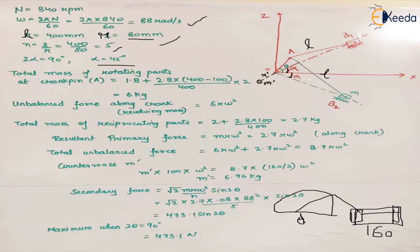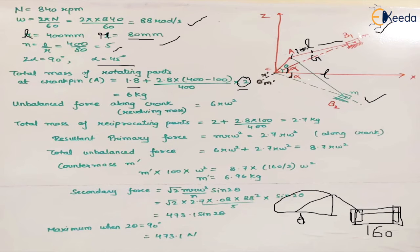The center of mass of the connecting rod is at 100 mm from the crank pin center, which is point A. Using dynamic equivalent reduction, the connecting rod is replaced by two point masses — one at the crank pin and one at the gudgeon pin. The mass at the crank pin is the rotating parts mass 1.8 kg, plus the portion of the connecting rod mass at the crank pin: 2.8 × (300/400) × 2 (for both rods). The total mass at the crank pin becomes 6 kilogram, giving an unbalanced force of 6rω².